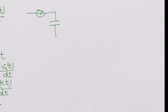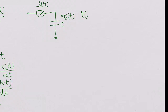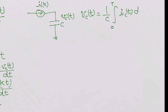Here we have the capacitor and you force a current I of T going into it. We will look at what the voltage across the capacitor is. The equation for the voltage across the capacitor when you force a current I of T is: VC(T) = (1/C) × integral from 0 to T of IC(T) dT.